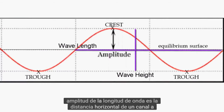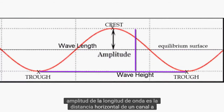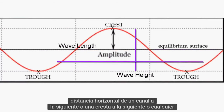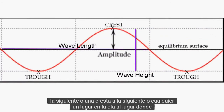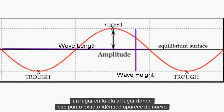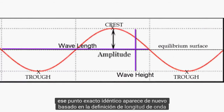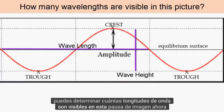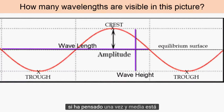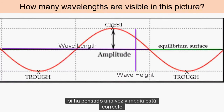The wavelength is the horizontal distance from one trough to the next, or one crest to the next, or any one spot on the wave to the place where that exact identical spot appears again. Based on the definition of wavelength, can you determine how many wavelengths are visible in this picture? If you guessed one and a half, you are correct.